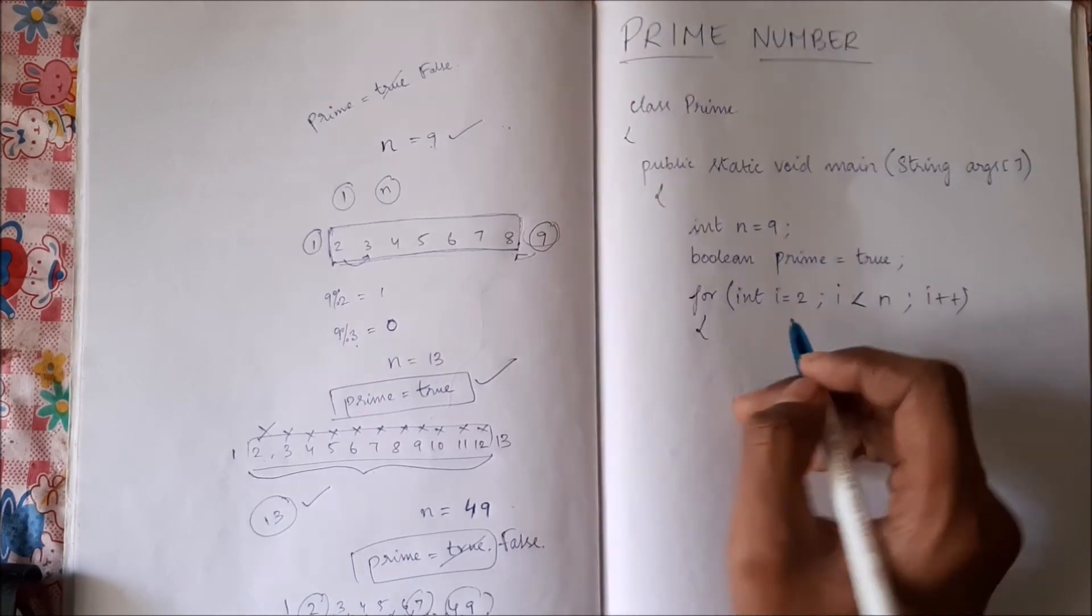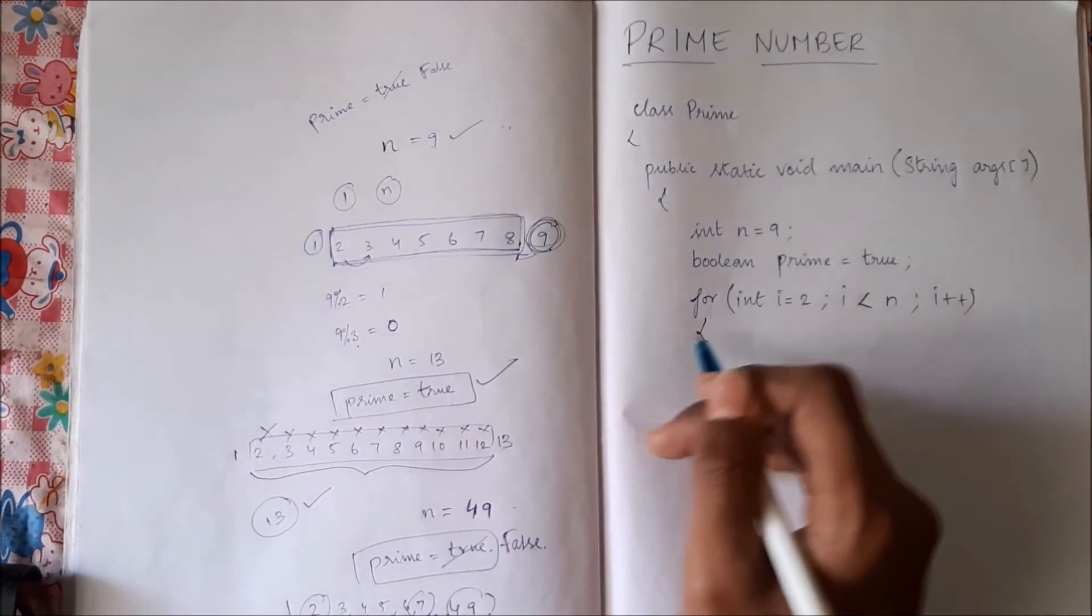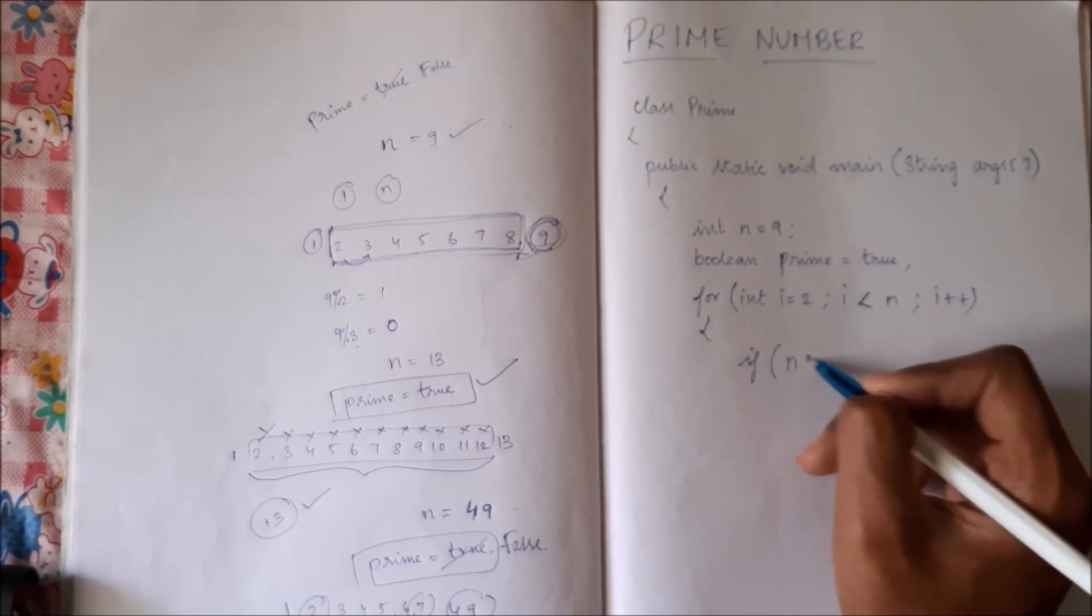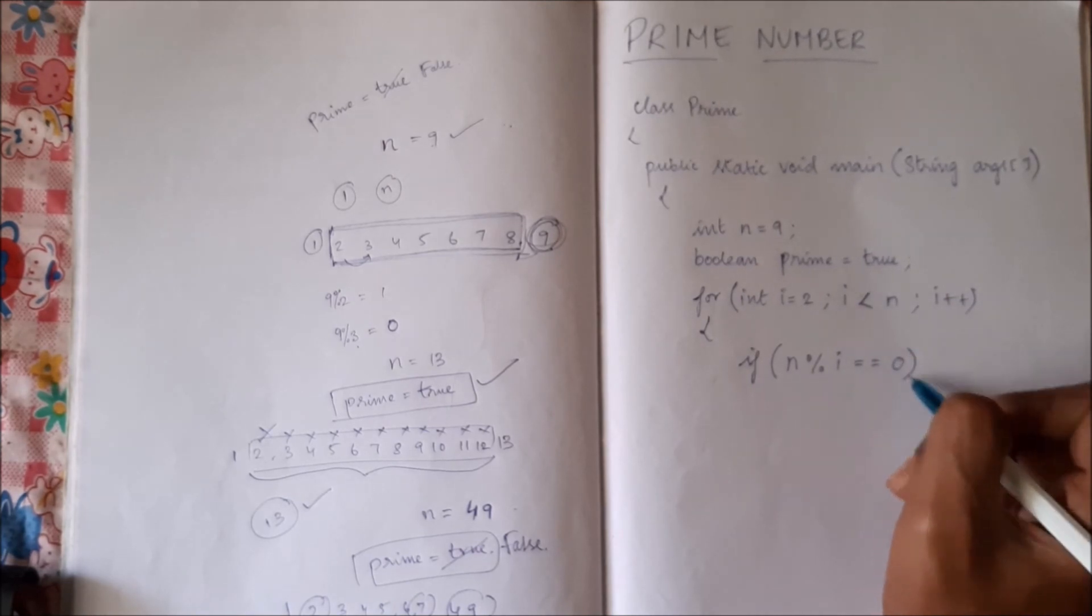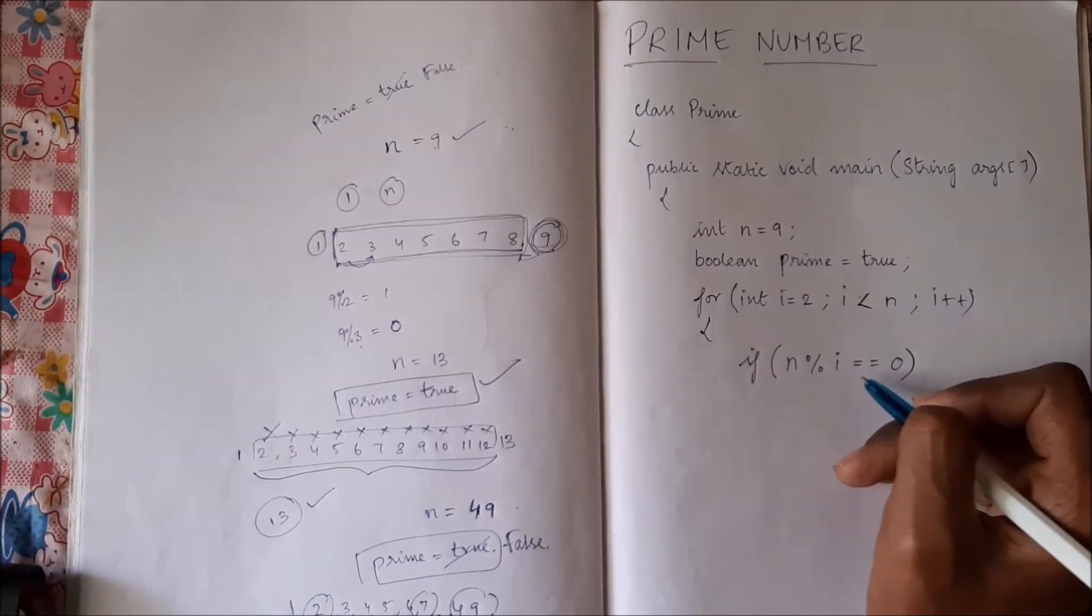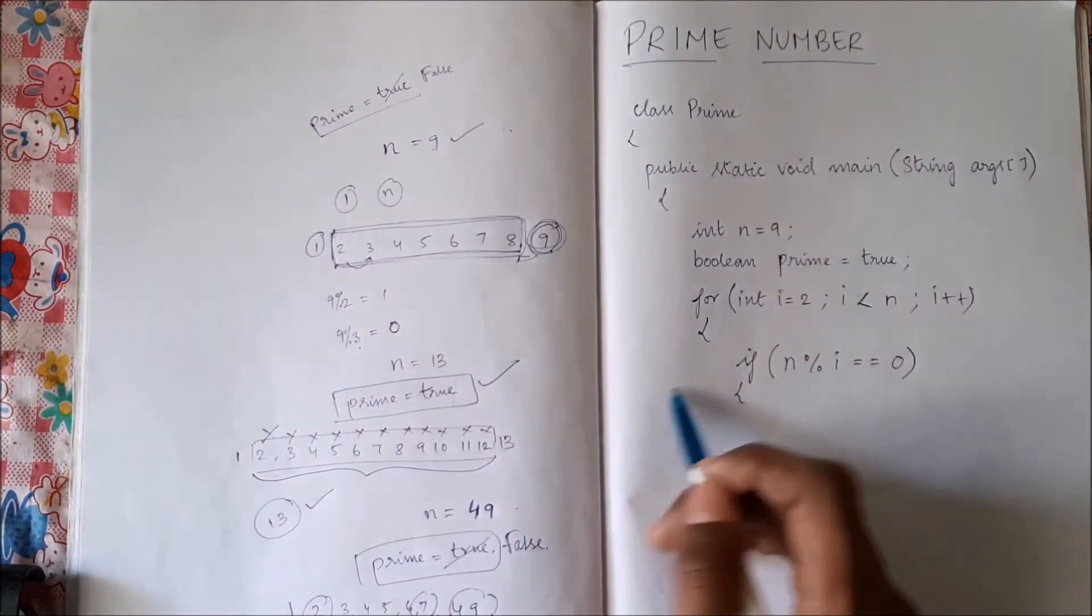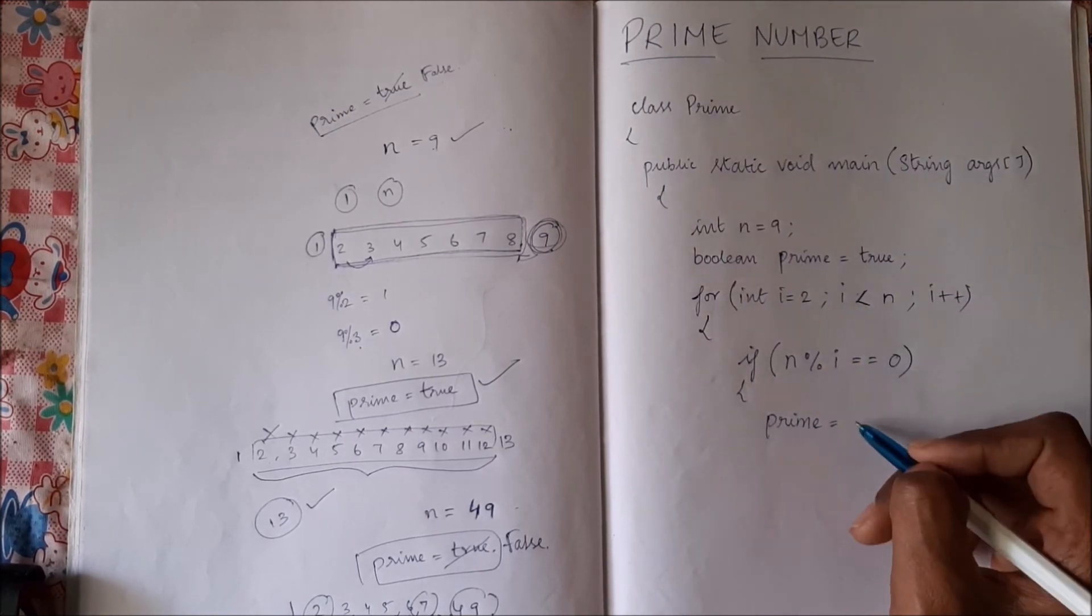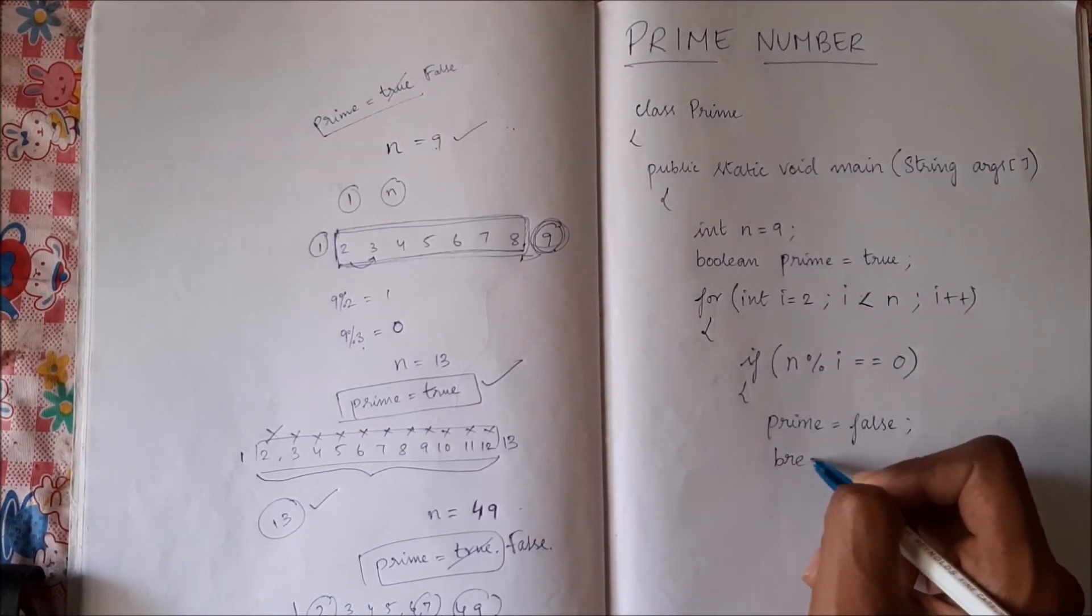So we have to check if the given number n is divisible by any of these. So if the given number n mod i results in 0, it means it is completely divisible. If it is completely divisible, it means it is not prime. So we have to change our assumption to false. So prime what we assumed is wrong, so we will make it as false. And then we break out of the loop.